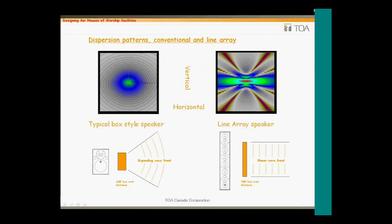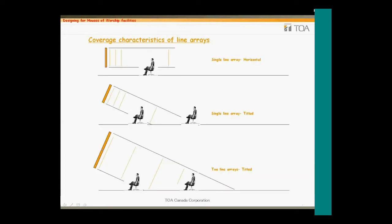The different characteristics and coverage between the two speaker types is illustrated here. The box-type conventional speaker with its expanding wave front produces a broader vertical coverage pattern than the line array with its planar wave front. One thing to pay attention to is the very desirable pattern control of line arrays. Since we have controlled vertical dispersion, care must be taken that speakers are placed correctly and the number of speakers selected will provide the coverage needed. With conventional speakers, the expanding wave front will cover more of the audience plane, but will also excite the reverberant field.